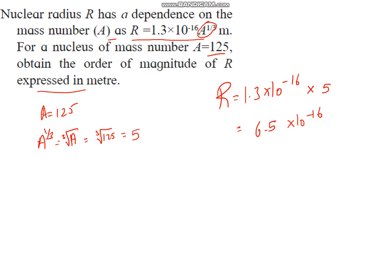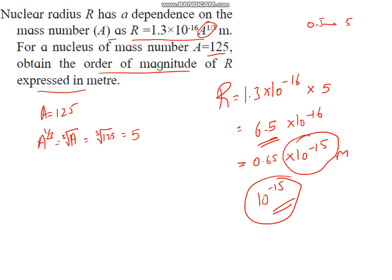If you remember, while doing the topic of significant figures, we have said that this part should be in the range of 0.5 to 5. It is greater than this, so we'll shift the decimal. This can be written as 0.65 into 10 raised to minus 15 meters. Therefore, they want the order of this magnitude, which is approximately 10 raised to minus 15. Please refer this part in the significant figures section. Let us go ahead to the next sum.